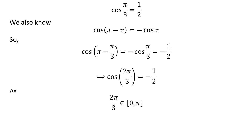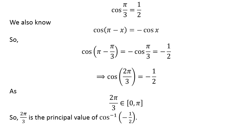As 2 times pi upon 3 lies in the closed interval of 0 and pi, so 2 times pi upon 3 is the principal value of inverse cosine of minus half.